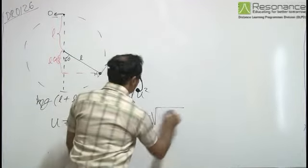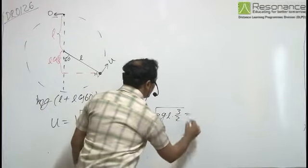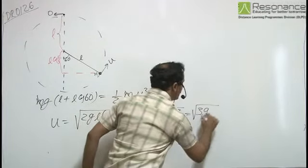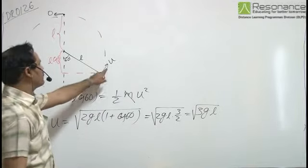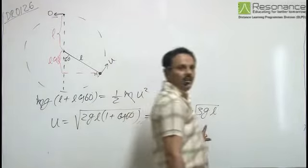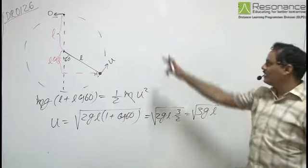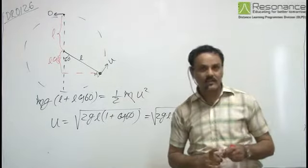So it is square root of 2gL times 3/2, that equals square root of 3gL. The tangential velocity given at the initial position has to be square root of 3gL for the particle to complete the vertical circle.